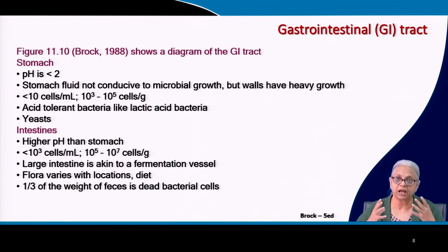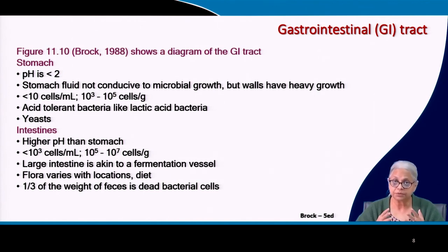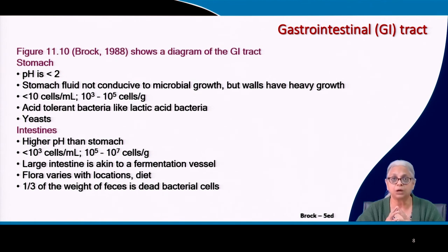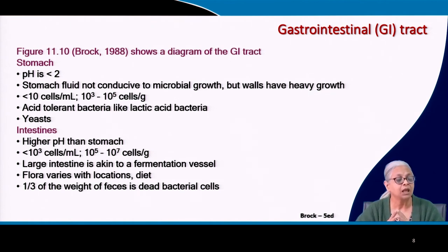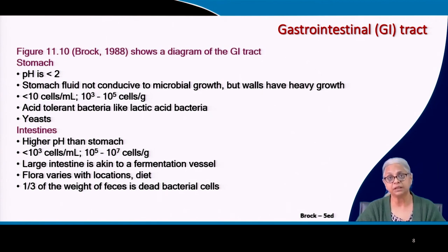How is it possible for an organ to have such low pH? It is possible because of the mucosal lining — these mucosal linings allow the stomach fluids to have a low pH. Stomach fluid by itself does not allow microbes to grow well, however the mucosal lining has a much greater propensity for microbial growth. The number of cells in stomach fluid is less than 10 cells per mL, and can vary from 1,000 to 100,000 cells per gram; it includes acid-tolerant bacteria like lactic acid bacteria as well as yeasts.